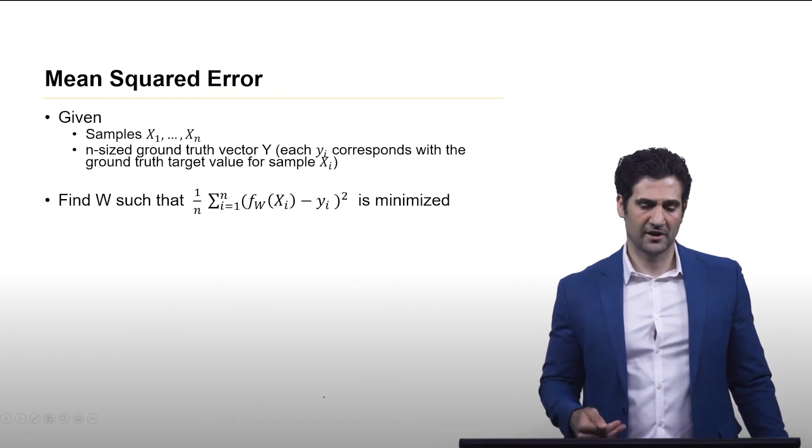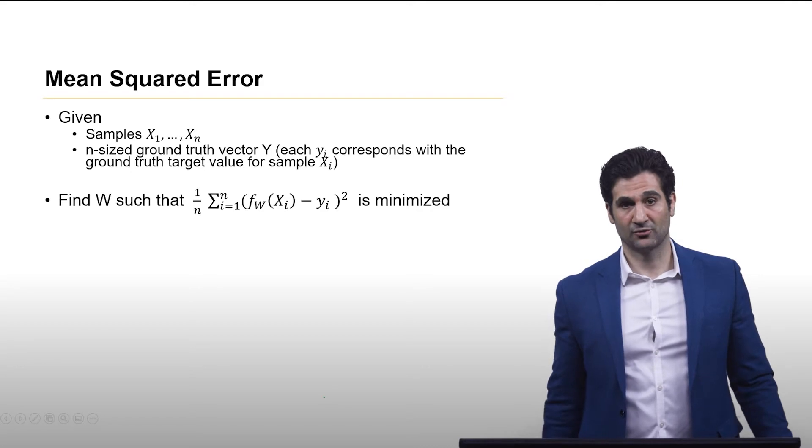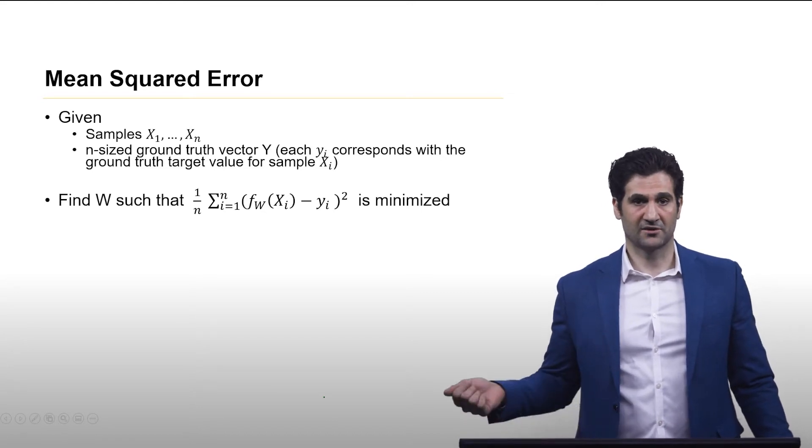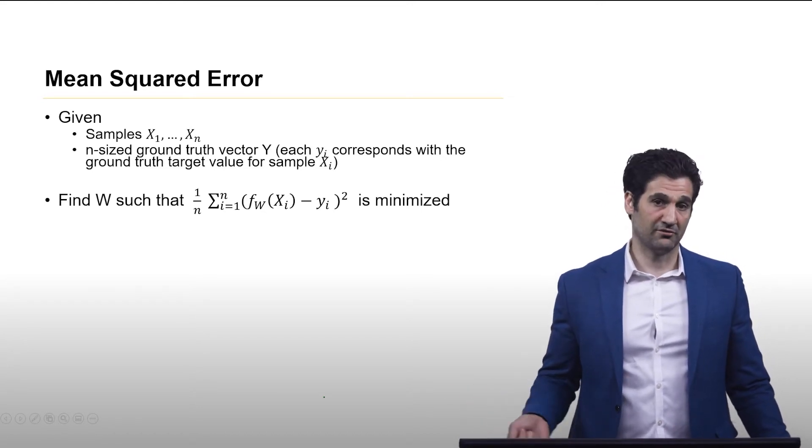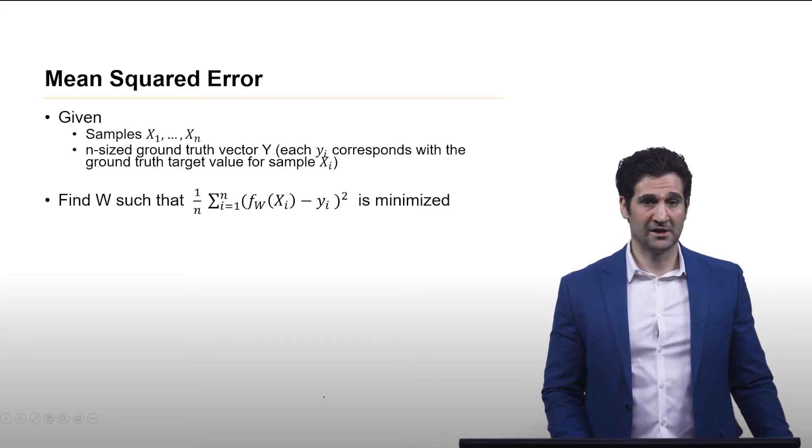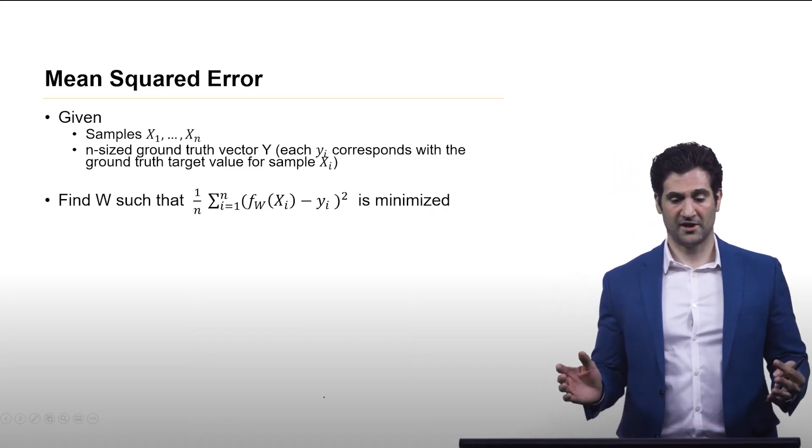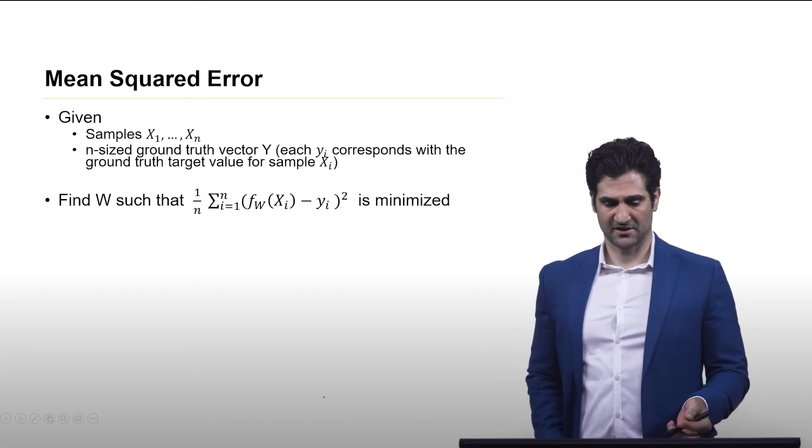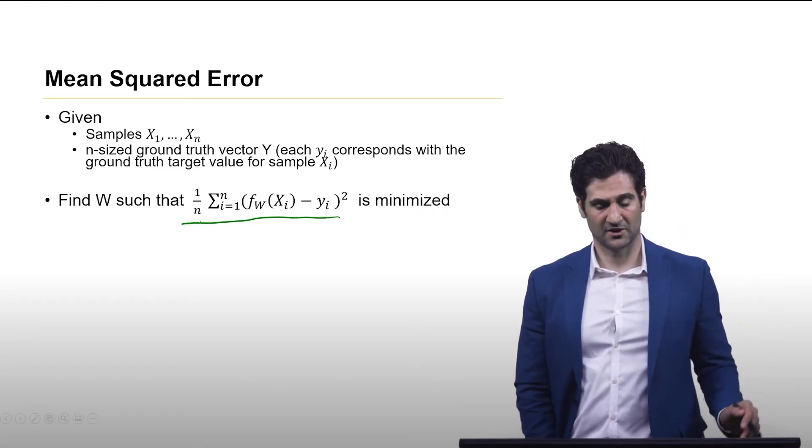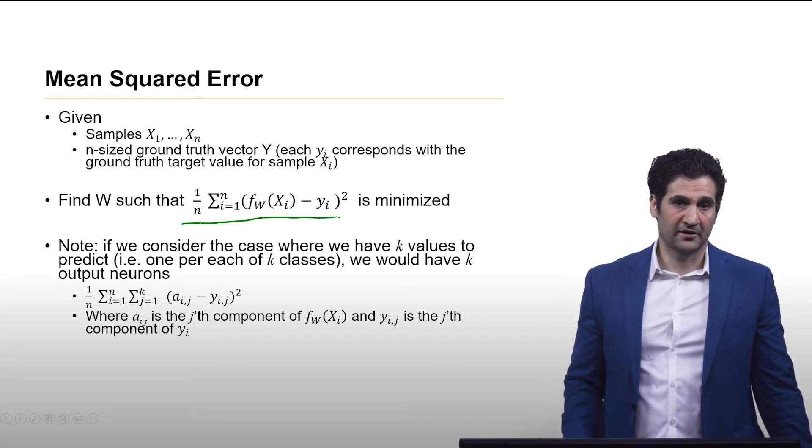So let's kind of look back at what we're aiming for here. We have a bunch of samples, historical data, x1 through xn, and we have this ground truth vector y, where each component of the y vector is a ground truth result of what it should be for each of the xi samples. So component yi of vector y is the ground truth associated with vector xi. And so we want to find w, this set of weights, such that this loss function is minimized. And in this case, we'll look at this sum of squares.